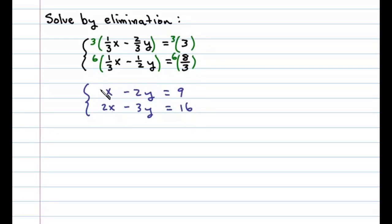If we multiply the first equation, both sides of the first equation by negative 2, we have negative 2X plus 4Y equals negative 18.